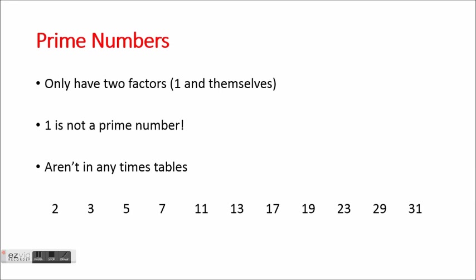Prime numbers are numbers that only have two factors: number one and themselves. That means they're only in the one times table and their own times table. For example, 5 is in the one times table and the five times table — it's not in any other times table. Same with 11. The key thing to remember is that 1 is not a prime number, because 1 is only in its own times table. A prime number has to be in exactly two times tables: one and itself.